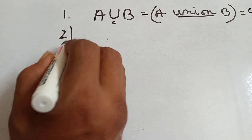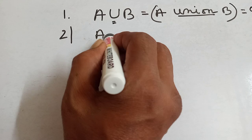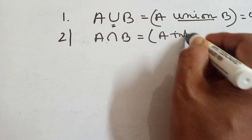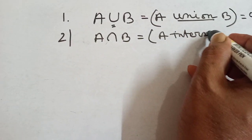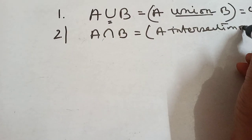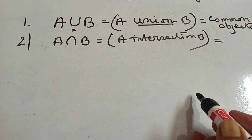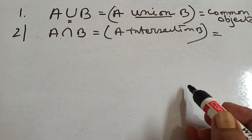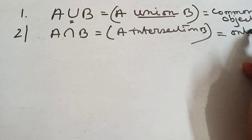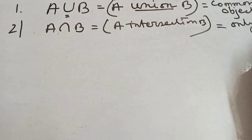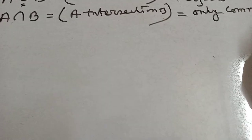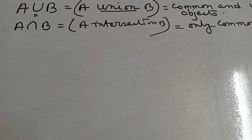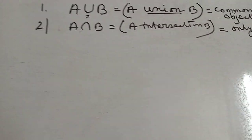Now, A intersection B. If A and B are two sets, A intersection B means you will take only common objects — only the common elements of A and B.